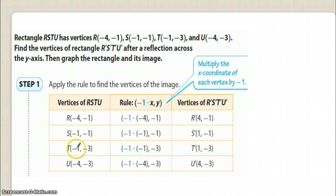Now for T, which is (-1, -3), you again multiply -1 times -1, which is the x-coordinate, and you will get a positive 1. So T prime becomes (1, -3). You do nothing at all to the y.